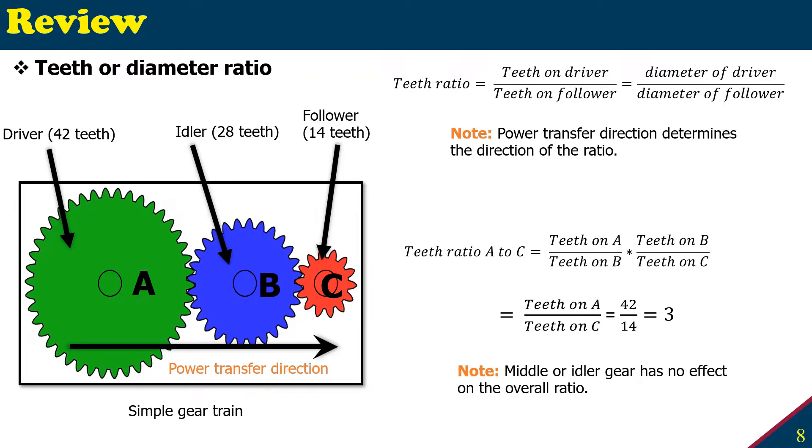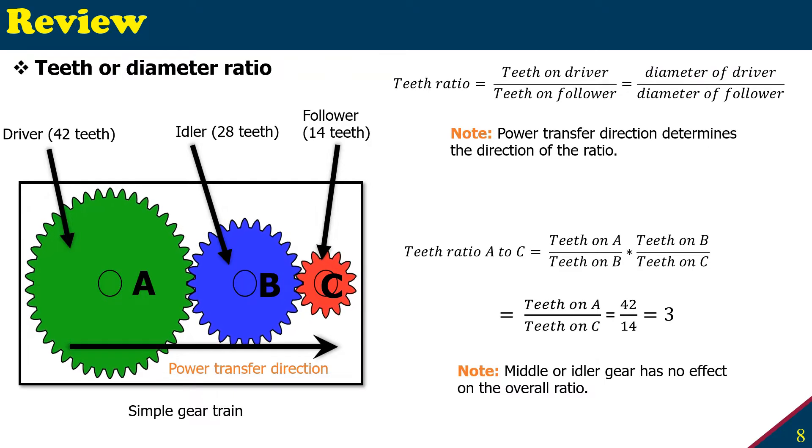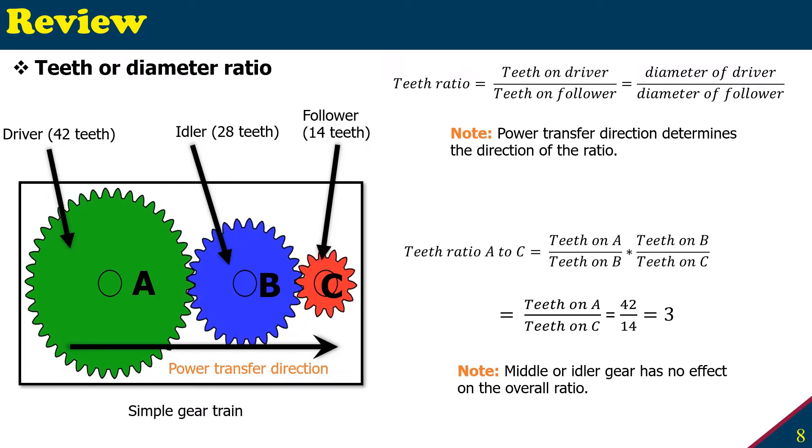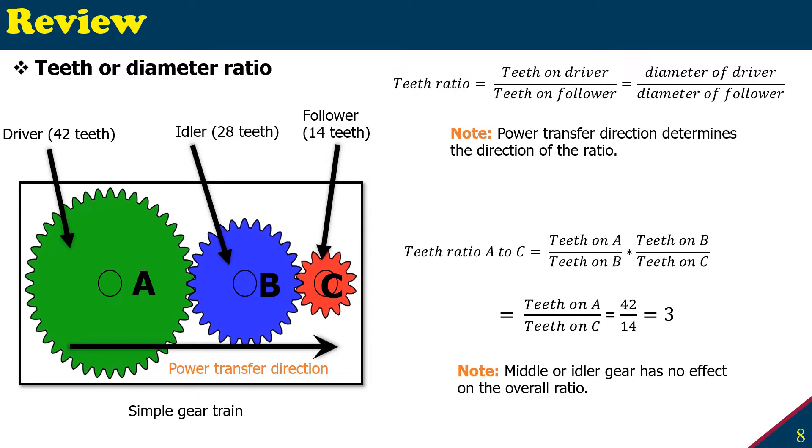Let's give a name to our green, blue, and red here like A, B, and C. Assuming A is the driver and red is the follower, then the power is transferring from left to right, from green to blue, blue to red. If we count the teeth of each gear, assume that on the green gear you have 42 teeth, on the blue one you have 28 teeth, and gear C has 14 teeth.